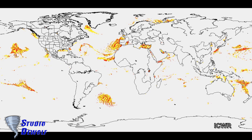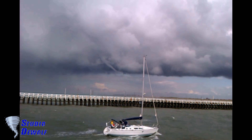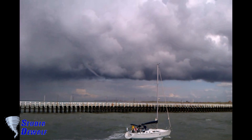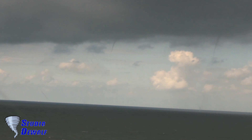Waterspouts form mostly in the tropics and subtropical areas. Other areas have also reported waterspouts, including Europe, the Middle East, Australia, New Zealand, and some are also found on the east coast of the United States and the coast of California. In Europe, waterspouts occur mainly in the second half of summer and autumn, when the relatively warm seawater encourages the formation of showers. These showers occur mainly in cold air from the polar regions, where large temperature differences occur between the seawater and the air above.